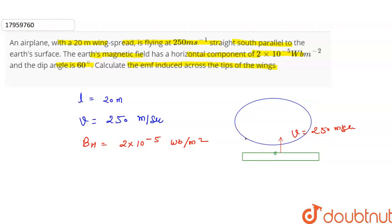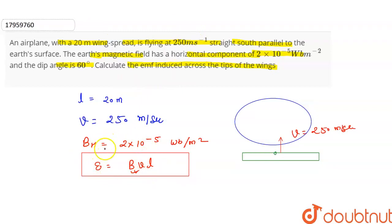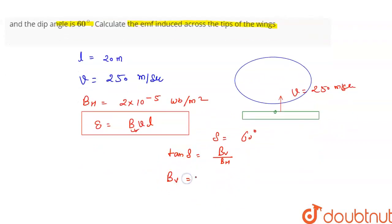If the wings move through a magnetic field, it will be the vertical component that matters. So simply, the induced EMF is equal to Bv × v × L, where Bv is the vertical component of the magnetic field. The angle of dip delta is equal to 60 degrees. So tan(delta) equals Bv divided by BH, meaning the vertical component Bv equals BH × tan(delta).